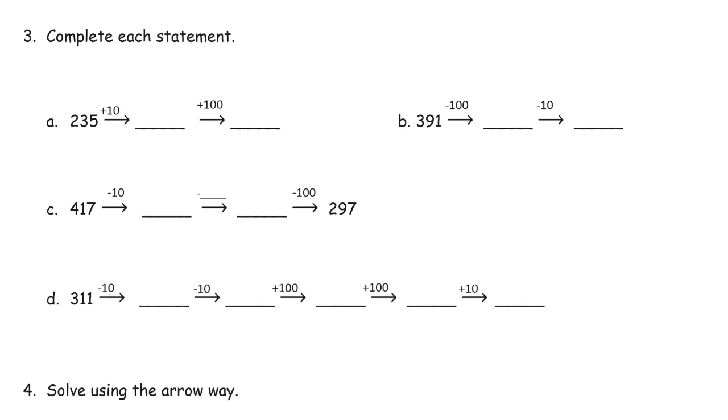Complete each statement. Now this is just basic arrow way. We're adding 10. So 235 plus 10 is 245. And then we're adding 100 to that. 345.